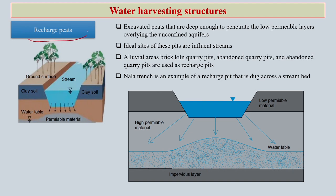The second type of water harvesting structure at the community level is recharge pits. Recharge pits are made through excavations deep enough to penetrate even the low permeable layers overlying unconfined aquifers. So even if you have a low permeable layer before the aquifer, recharge pits will allow water to reach the aquifer by crossing those semi-permeable or less permeable layers.